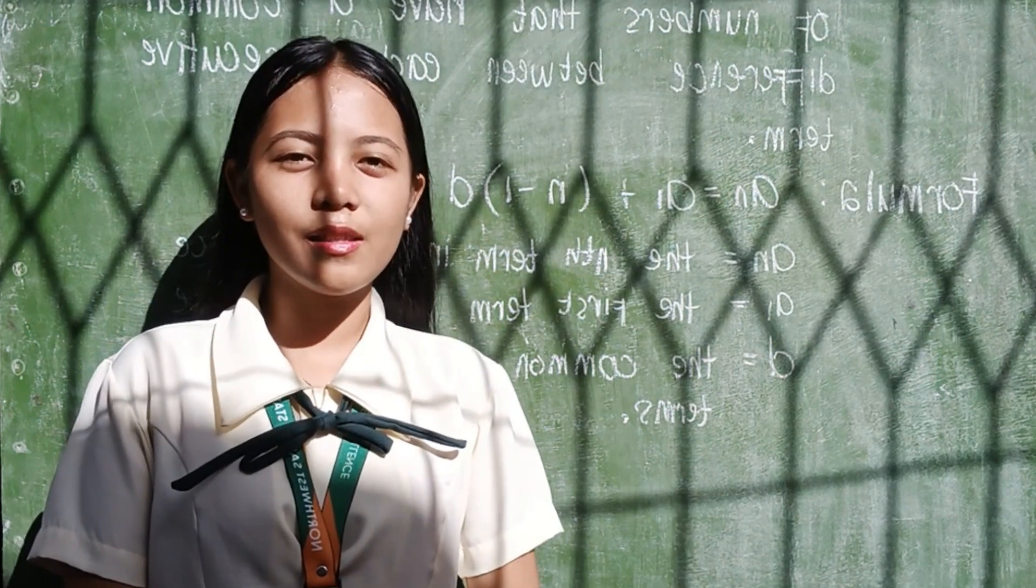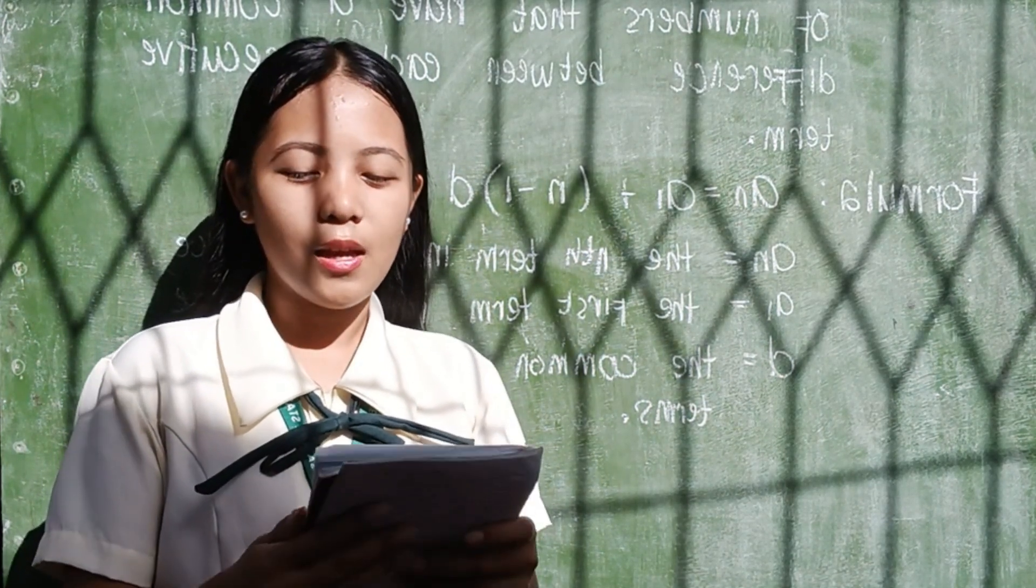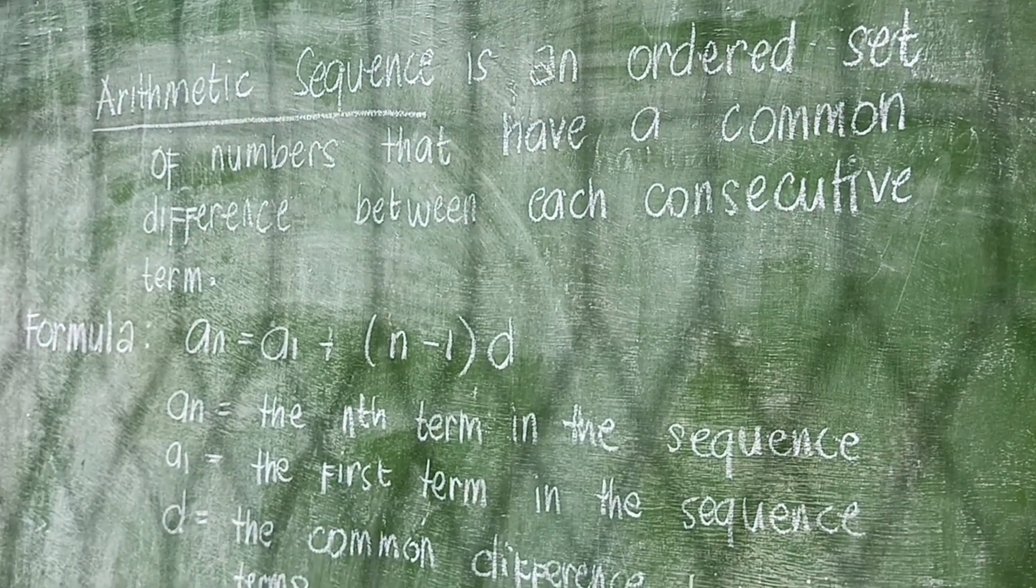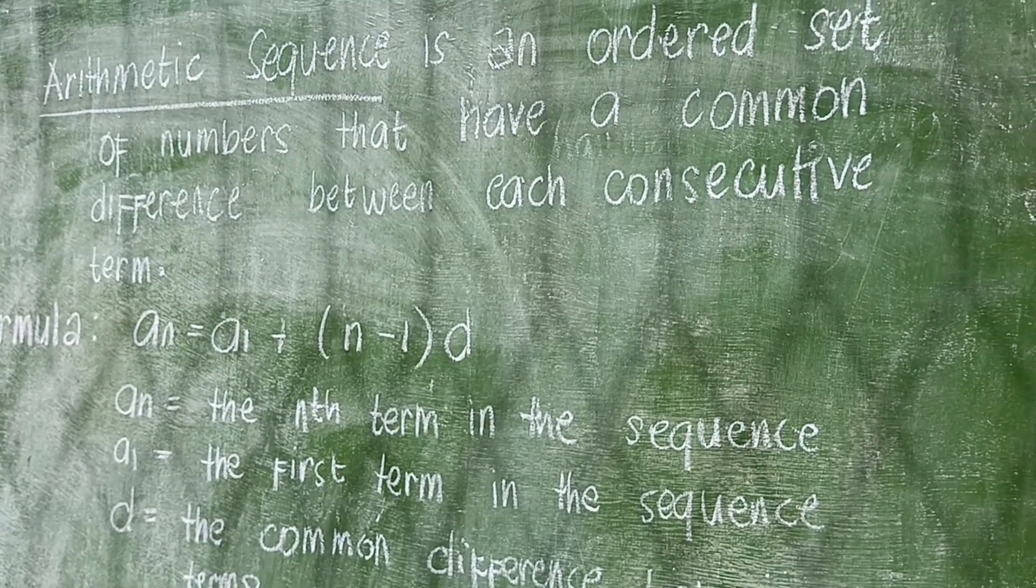But first, let us define the arithmetic sequence. Arithmetic sequence is an ordered set of numbers that have a common difference between each consecutive term.